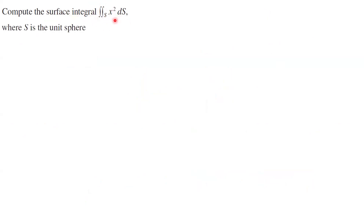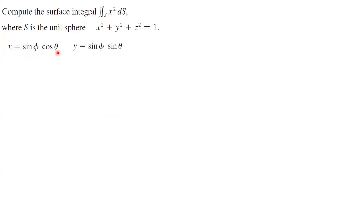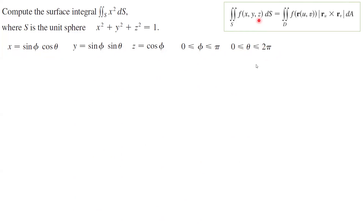In this example, we are interested in calculating the surface integral of x² dS, where S is the unit sphere x² + y² + z² = 1. Now let's use a parametrization. Since we have a unit sphere, we get x = sin(φ)cos(θ), y = sin(φ)sin(θ), and z = cos(φ), with φ bounded between 0 and π, and θ bounded between 0 and 2π. This is the formula that we follow.